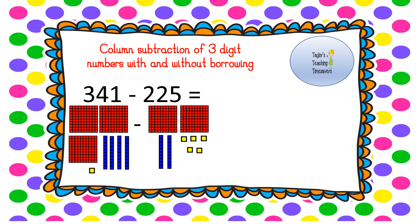Right, let's try another three digit number question, but this time we're going to need to do some borrowing. So let's write out the question: 341 take away 225. There we go. So as we can see by looking at that ones column, the one is too small. The smallest number can't be on the top, it's smaller than the five.